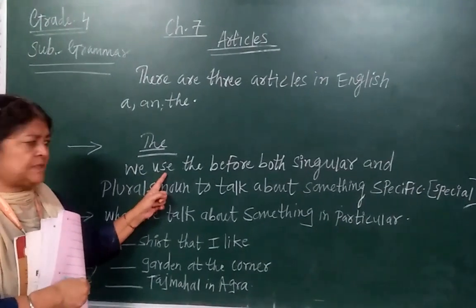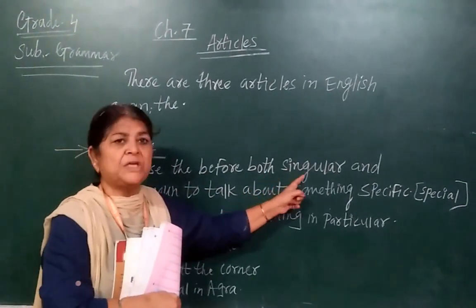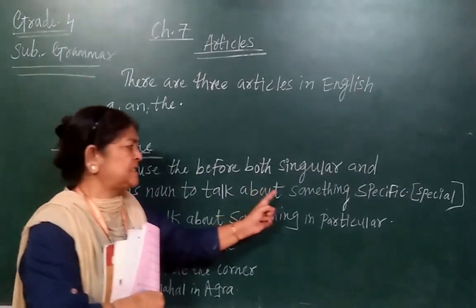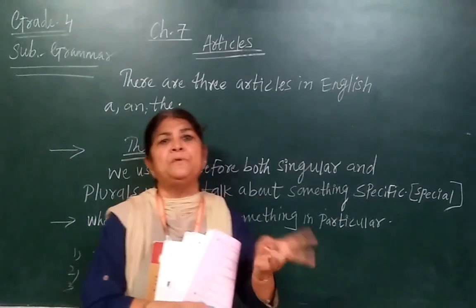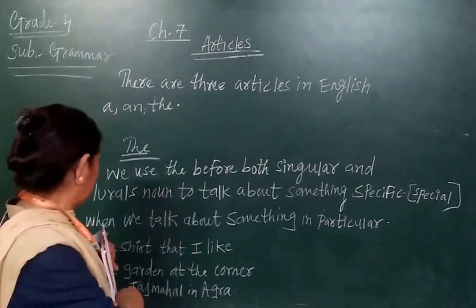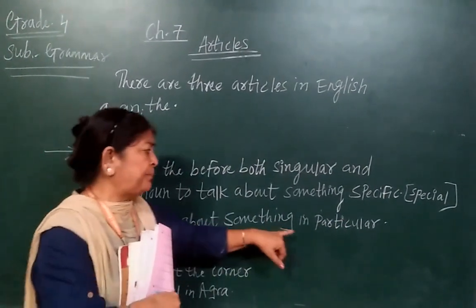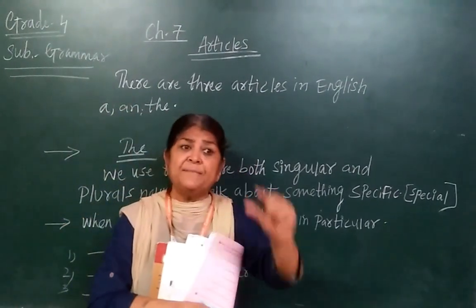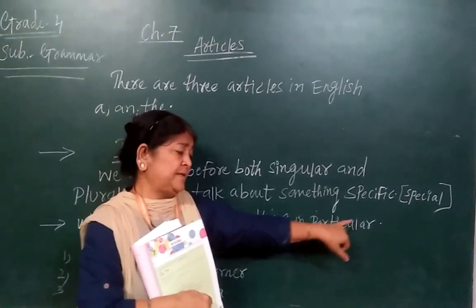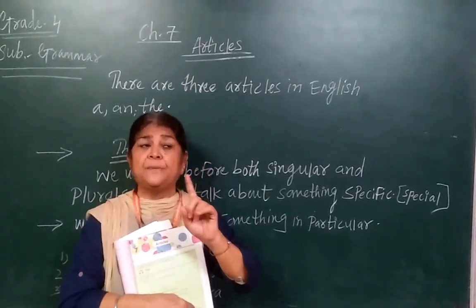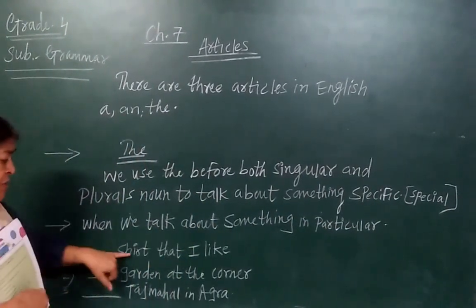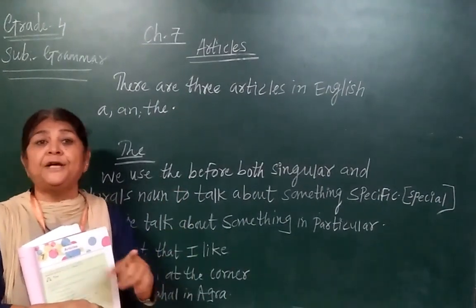We use 'The' before both singular and plural nouns to talk about something specific — whether it is singular or plural. When we talk about something in particular, it is specific. If we speak about a particular thing, then we say 'The.' For example: the shirt that I like.